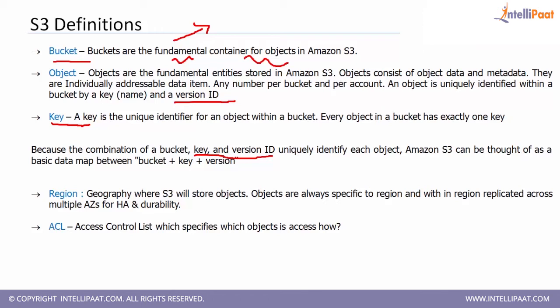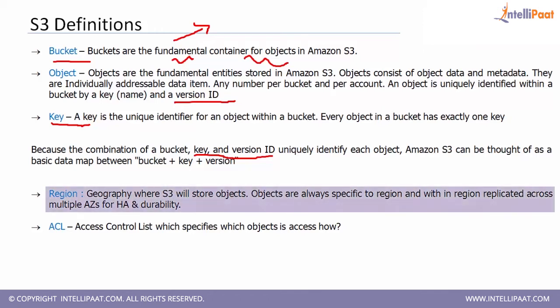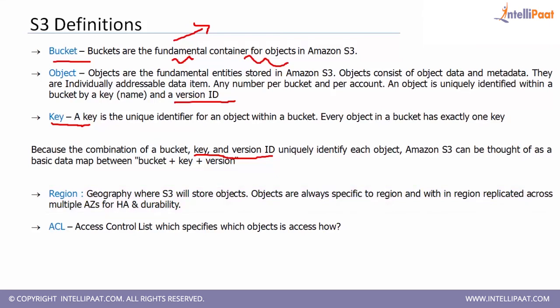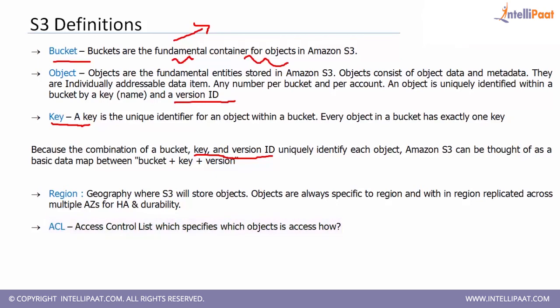Region — S3 is always region-specific. There is no concept of a zone inside S3; everything is stored inside a region only. When you're storing over the internet and want to share with family and friends, Amazon provides two options: an access control list and a policy. The access control list helps you specify which objects can be accessed and how.